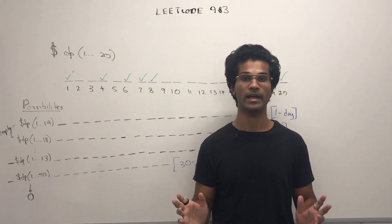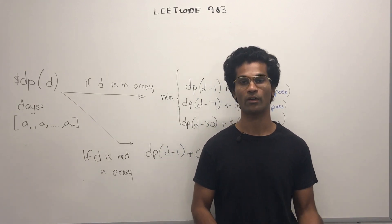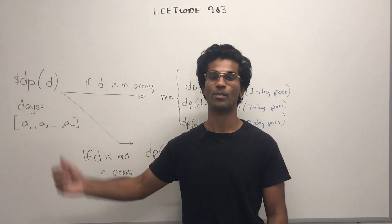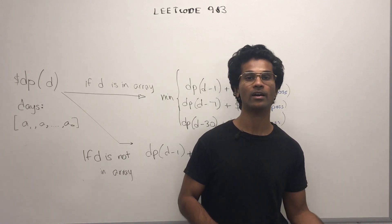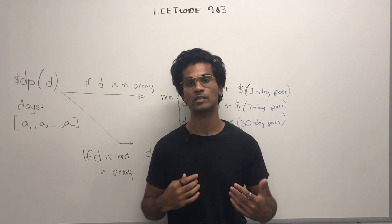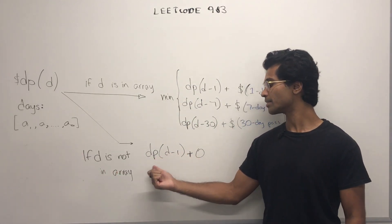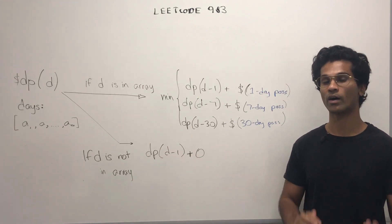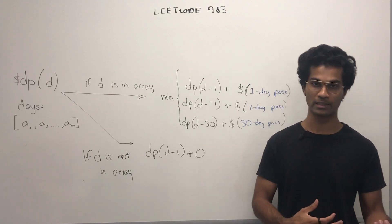Now, let's look at the actual DAG. If this is an array representing all the days that we have to travel, then dp of d represents the minimum cost it takes to travel between the beginning to that range d inclusive. If d does not belong to this array, what we're going to do is dp of d minus 1 plus 0, because we don't have to travel that day, and we can reuse the minimum cost from the previous day.